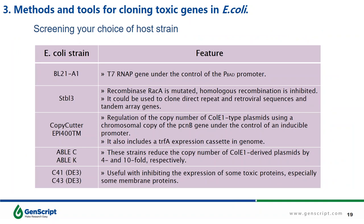In addition to these genetic tools, many E. coli hosts have been developed for cloning toxic genes, each showing excellent performance in different ways. I want to highlight STBL3, CopyCutter EPI-400, and C41 or C43 as examples. The STBL3 E. coli strain is derived from HB101. In this strain, the recombinase RecA is mutated so recombination is inhibited. It can be used to clone direct repeats, tandem repeats, and tandem array genes.